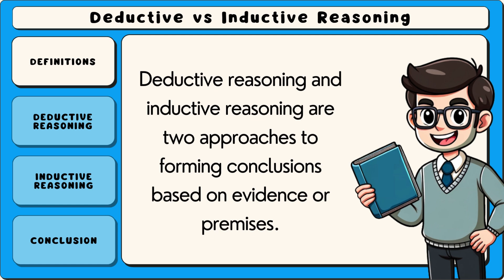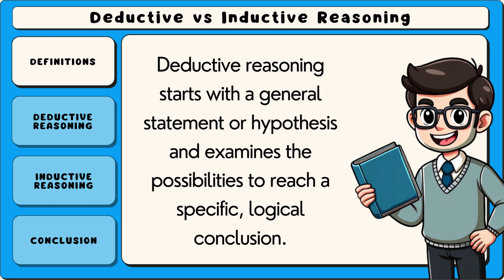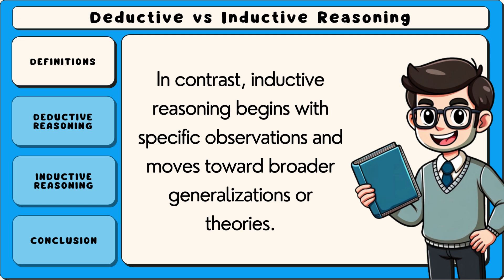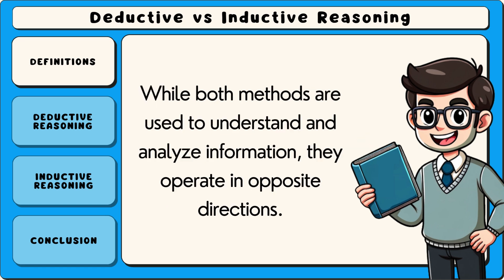Deductive reasoning and inductive reasoning are two approaches to forming conclusions based on evidence or premises. Deductive reasoning starts with a general statement or hypothesis and examines the possibilities to reach a specific logical conclusion. In contrast, inductive reasoning begins with specific observations and moves toward broader generalizations or theories. While both methods are used to understand and analyze information, they operate in opposite directions.